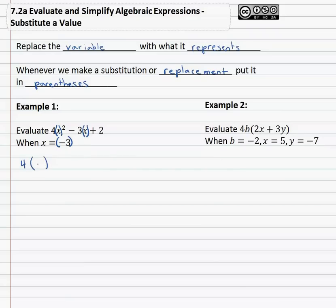So we have 4x, which is now negative 3 squared, minus 3x, which is now replaced with in parentheses negative 3, plus 2. When we do this, what we end up with is an order of operations problem.